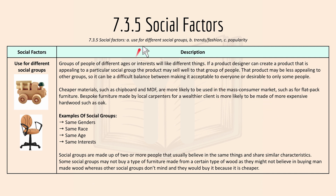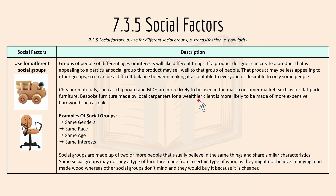Then we have 7.3.5 social factors, which include different social groups, trends and fashions, and popularity. Groups of people of different ages or interests would want different things, so if a product designer creates a product appealing to one social group, it may not appeal to another. Cheaper materials such as chipboard or MDF are more likely to be used in the mass consumer market, while a furniture maker or local carpenter can make a special request piece for a wealthier client, more likely to be made of expensive hardwood such as oak. Social groups share similar characteristics like gender, race, age, or interests, and some groups may refuse man-made wood on principle while others would buy it because it is cheaper.